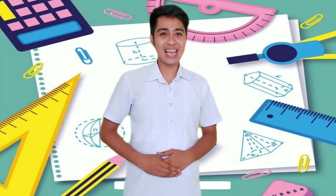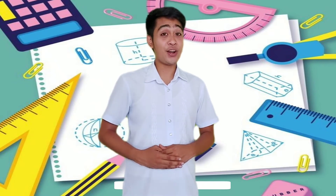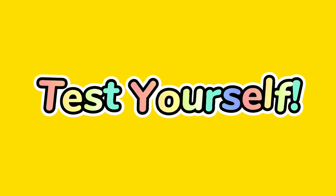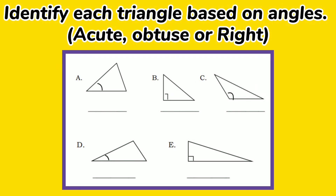It's time to test yourself. I know that you can do it. Write your answers in your notebook. Send it to me through messenger, or you can comment your answers below. Let's check if you have learned something in this lesson. Test 1: Identify each triangle based on sides — equilateral, isosceles, or scalene. Test 2: Identify each triangle based on angles — acute, obtuse, or right.